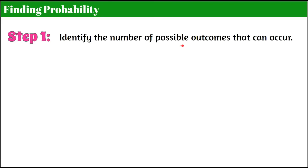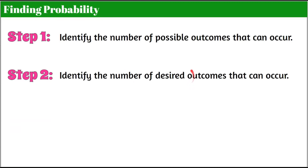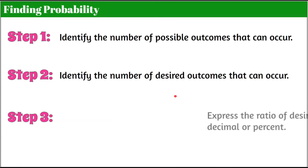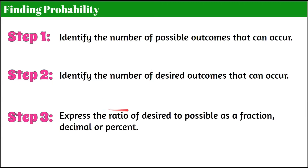Here's how we find probability in three steps. Step one: identify the number of possible outcomes that can occur. Step two: identify the number of desired outcomes that can occur. Step three: express those two values as a ratio of desired to possible, written as a fraction, decimal, or percent.